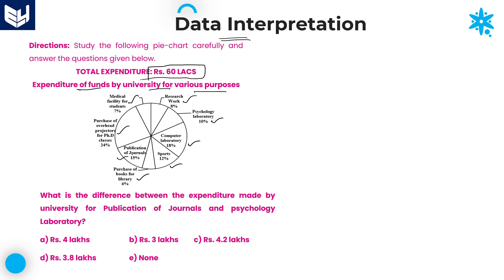These are the various areas in which the university is spending money. The entire expenditure is 60 lakhs distributed across all these different purposes. Based on that, you need to solve the questions — it is not a difficult task, it is very easy.